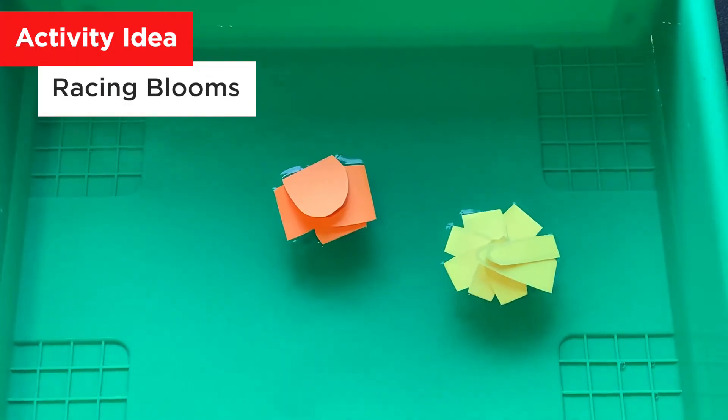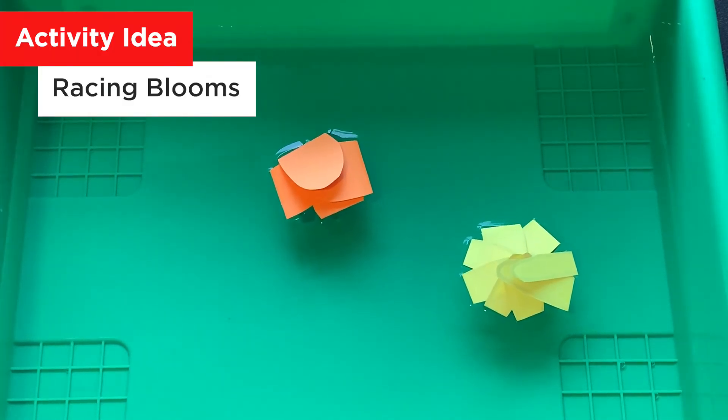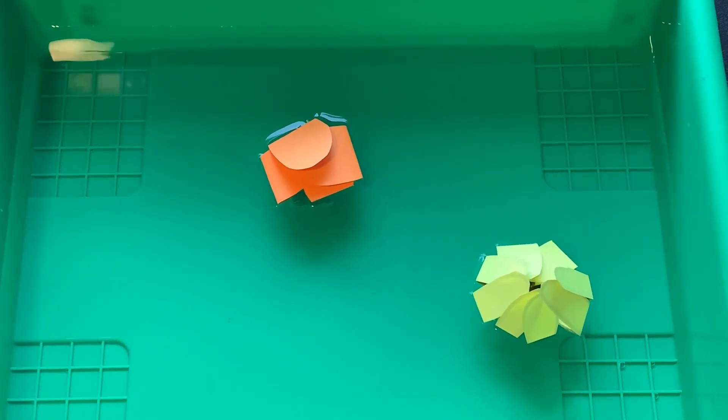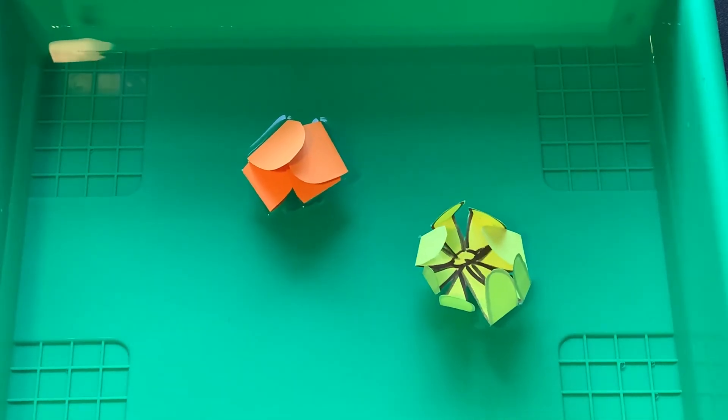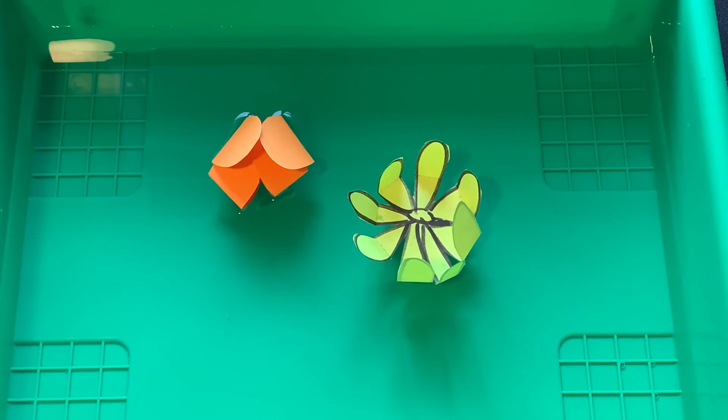How about racing your blooming flowers? You can get two flowers and race them to see which one opens first. So we have our orange and our yellow. Which one do you think is going to open first? Yep, they're both off. They're doing it. The yellow's definitely has some good movement. The orange is trying. The yellow's there. The yellow's way ahead. The yellow bloomed first.